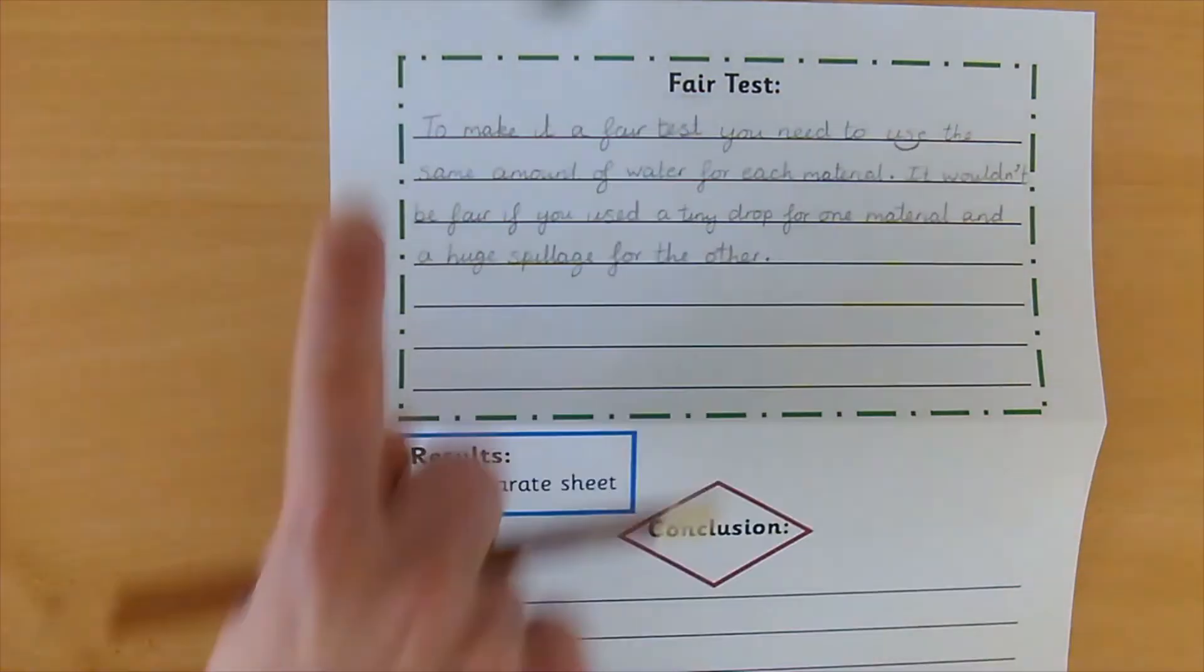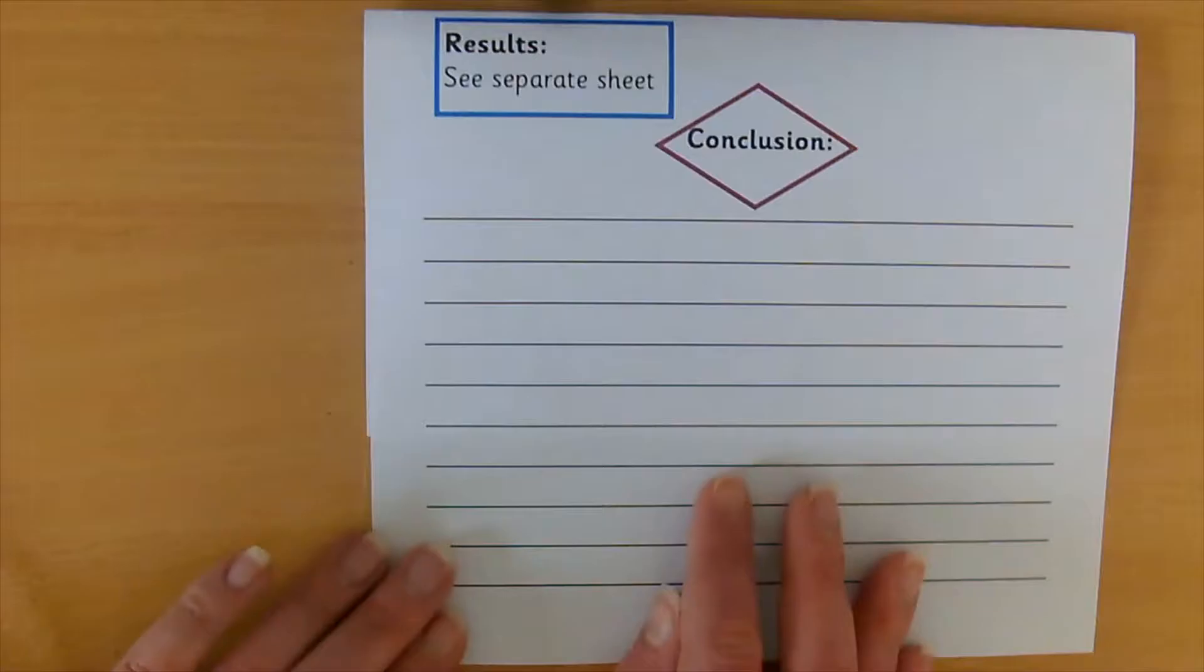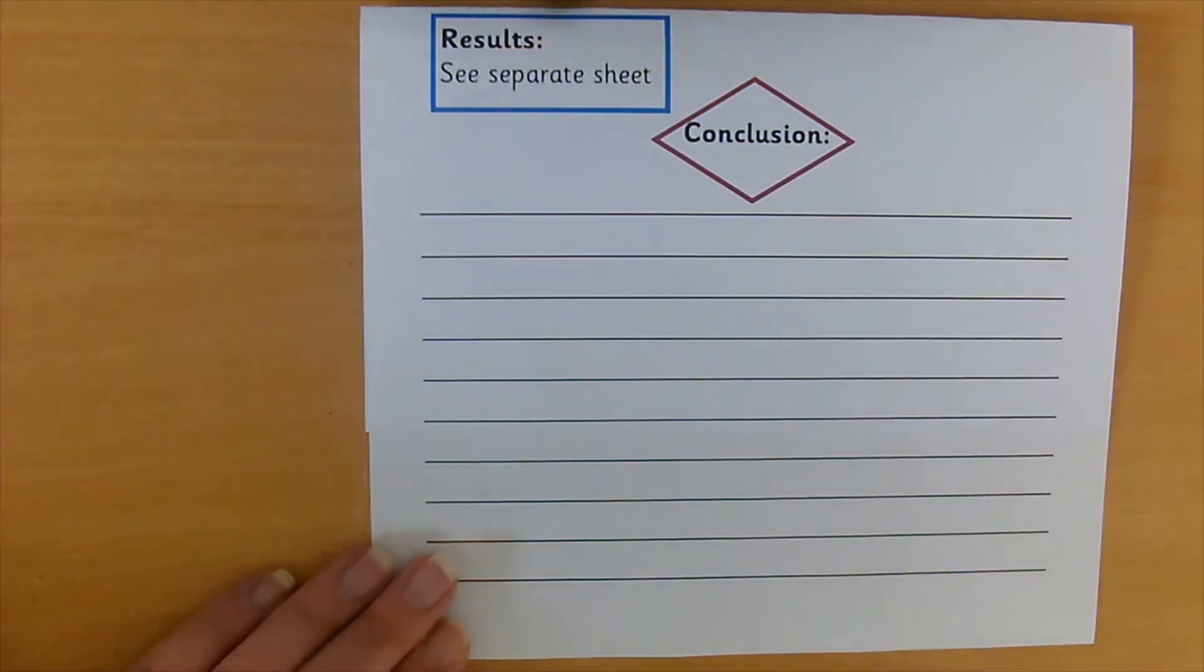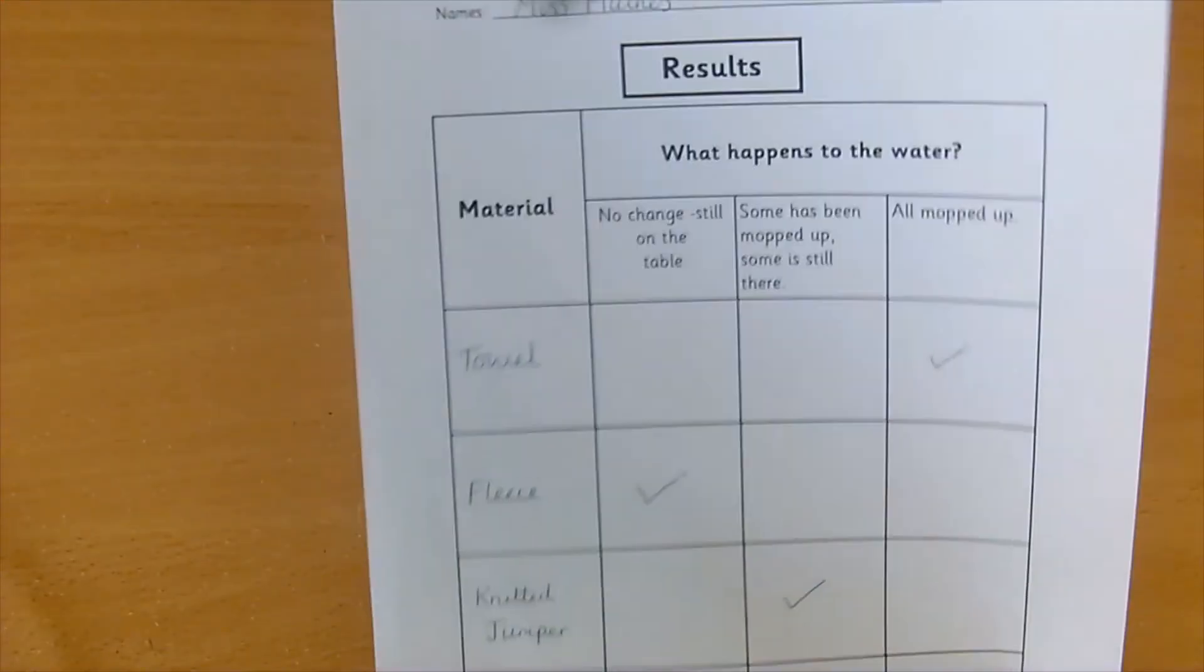Welcome back. So you should have finished your fair test section and now we're going to move on to the conclusion. I've just folded mine so it fits on my table. So the conclusion means what we have concluded from our experiments or our investigation, what we have found out. At the beginning we made a prediction about which material would be the most absorbent or which material would be the best to use instead of kitchen roll for a kitchen cloth to mop up all those spillages you might have in the kitchen. So look back at your results to find out which one was the best.